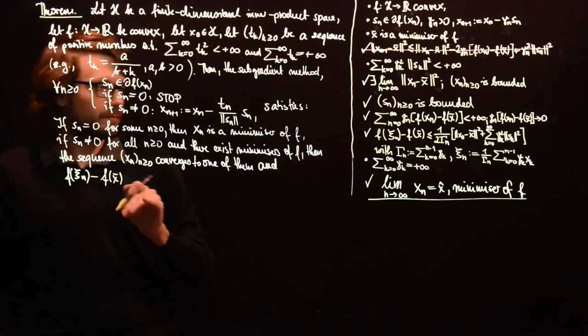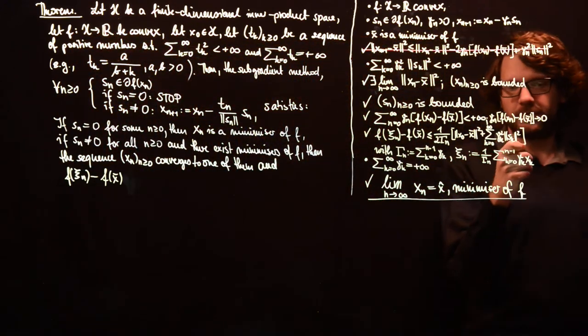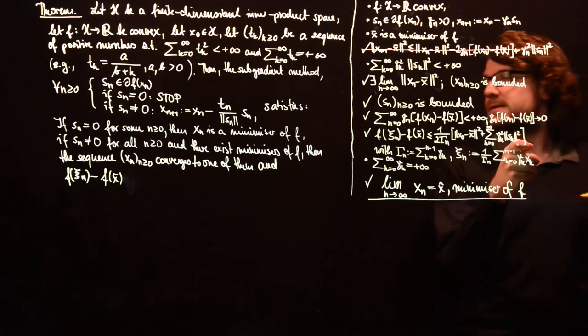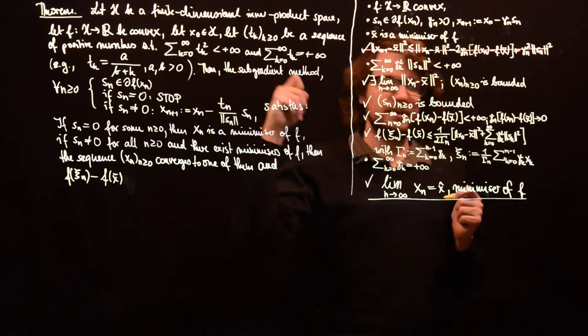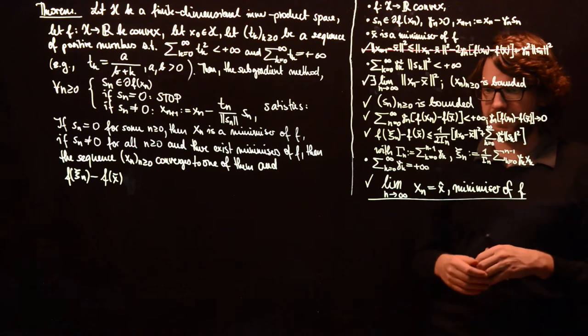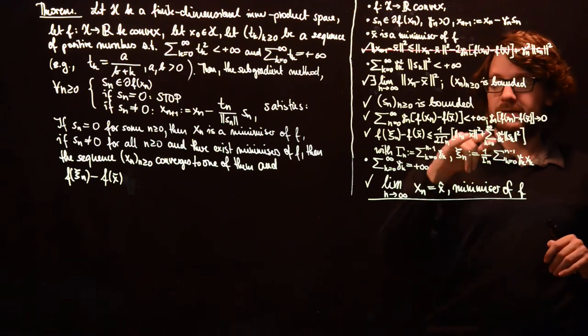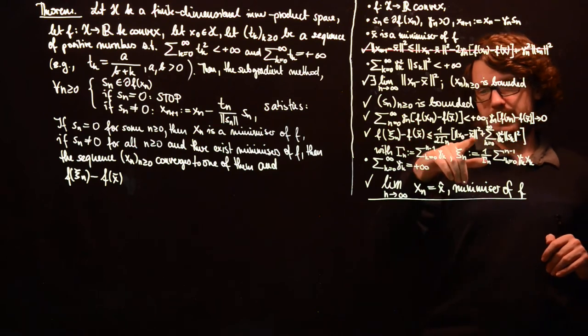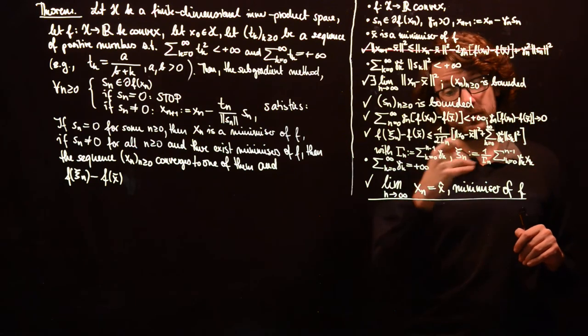Then what we know is that the sum of gamma_k squared norm of s_k squared is just the sum of t_k squared, which just has some fixed value. And this distance between our starting point and any solution also is a fixed value.